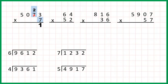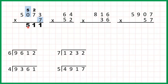Now we have 7 times 7 which is 49, but we need to add the 2 above, and 49 plus 2 is 51, which we need to write as 5, 1. Now 0 times 7 is 0 but we need to add the 5 on top, and 0 plus 5 is 5.